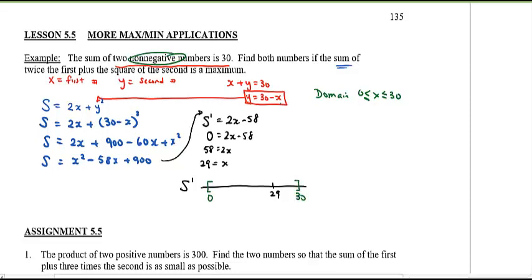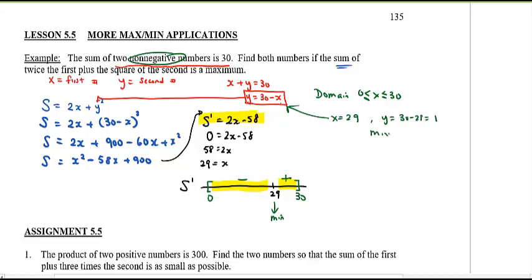We test the two regions by plugging into S prime. Plug in 1 — that region is negative. Plug in 29.5 — that region is positive. Negative to positive means x equals 29 is a minimum. So when x equals 29, y equals 30 minus 29, which equals 1. This gives a minimum.